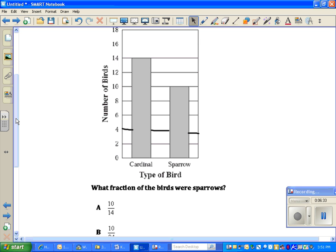There's the type of bird, the cardinal and the sparrow. The question wants to know, what fraction of the birds were sparrows? If they're asking about the fraction of the birds, I need to know how many birds there are in total. So first, let me find how many sparrows there were and then how many cardinals there were. I'm going to look at my graph and go up on the cardinal graph and it stops here at 14. So there were 14 cardinals. Then let me look at the sparrow bar. It stops at the 10. So together, I need to add this. There were 14 plus 10. So there are 24 total birds.